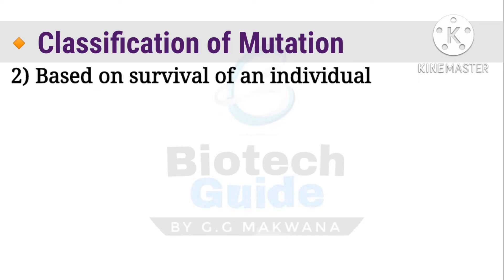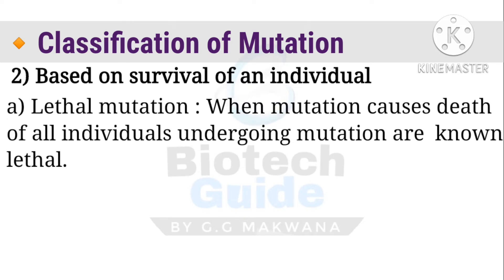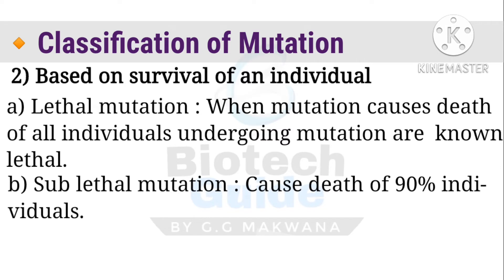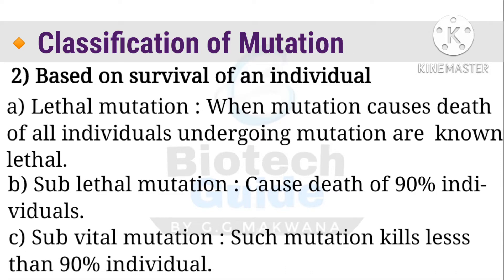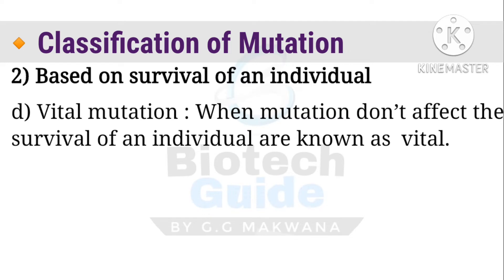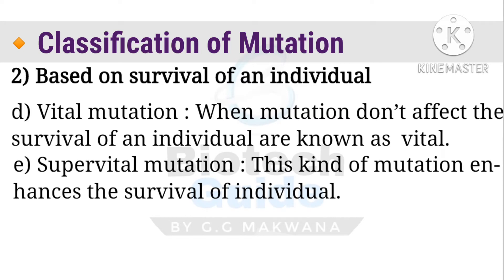The second classification is based on survival of an individual, and there are five types. First, lethal mutation, which causes death of all individuals. Second, sublethal, defined as a 90% chance of death. Third, sub-vital mutation, which kills less than 90% of individuals. Fourth, vital mutation, which does not affect survival. Fifth, super-vital mutation, which enhances survival of the individual. Essentially, lethal is dangerous and causes death, while vital has no negative effect on survivability.